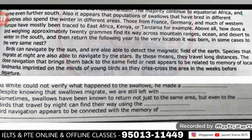Q5: 'Bird navigation appears to be connected with the memory of dash.' Bird की जो navigation है वो connect होती है memory के साथ। इसका answer है 'local landmarks।' यहाँ जो major keywords हैं — memory और navigation। Last line देखो: 'The close navigation that brings them back to the same field or nest appears to be related to the memory of local landmarks, imprinted on the minds of young birds as they criss-cross the same area in the weeks before departure।'